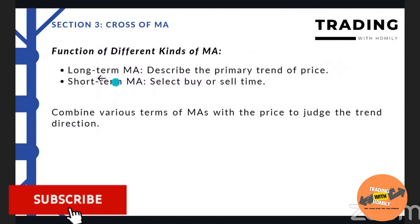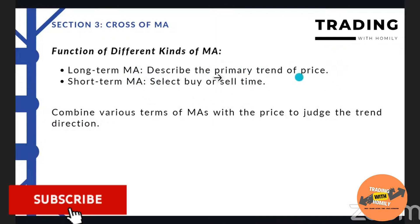We go to the Cross of MA first - the function of different kinds of MA. For the long-term MA, it describes the primary trend of price. For the short-term MA, it helps select the buy or sell time. Combine various terms of MA with the price to adjust the trend direction.